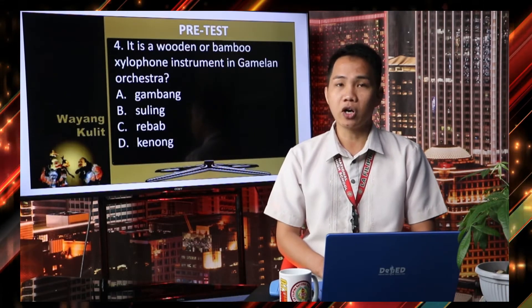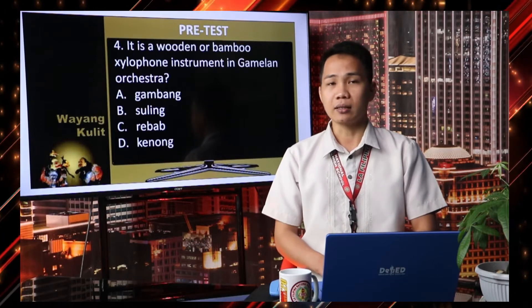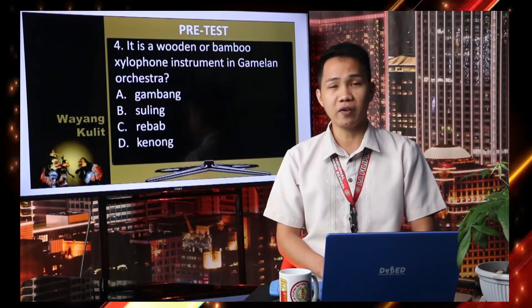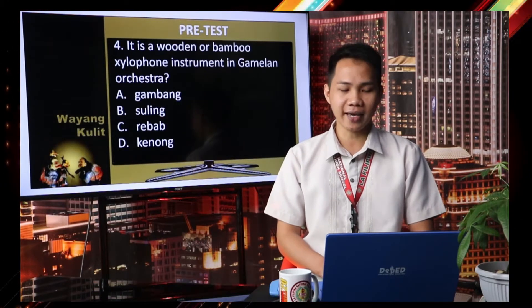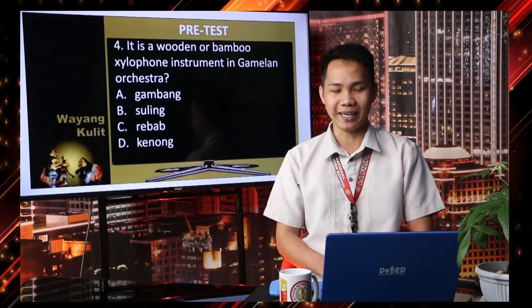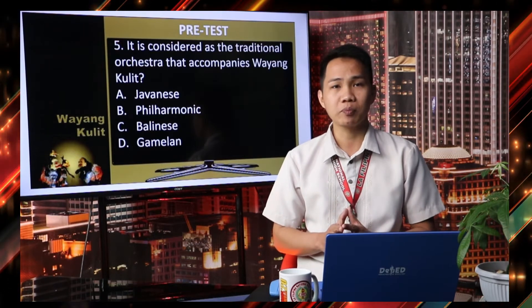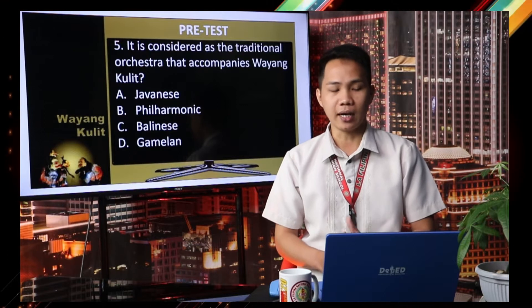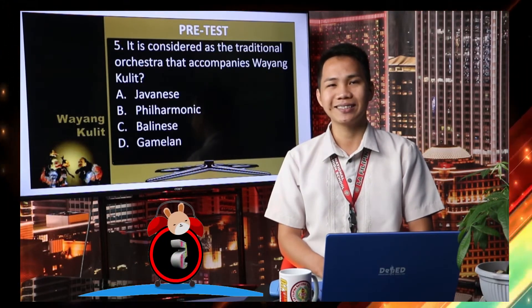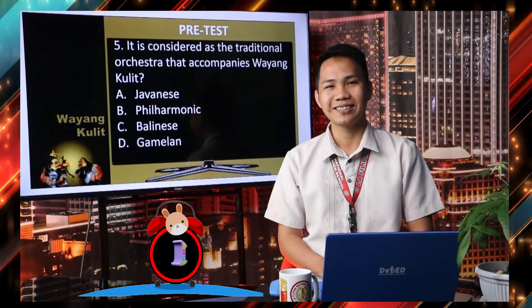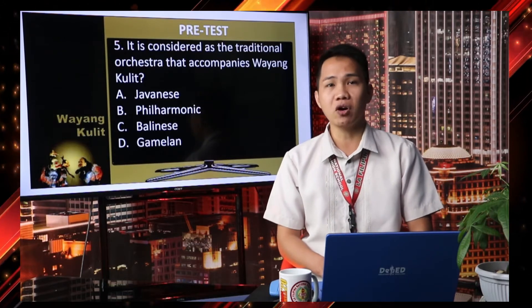Number four: it is a wooden or bamboo xylophone instrument in the gamelan orchestra. Letter A. Gambang, Letter B. Suling, Letter C. Rebob, Letter D. Keno. Your five seconds starts now. The correct answer is Letter A, Gambang. Last item: it is considered as the traditional orchestra that accompanies Wayang Kulit. Letter A. Javanese, Letter B. Philharmonic, Letter C. Balinese, Letter D. Gamelan. Your five seconds starts now. The correct answer is Letter D, Gamelan. We are done with our pre-test.